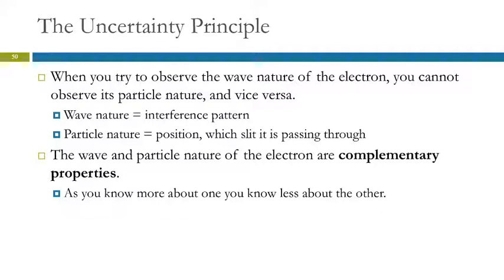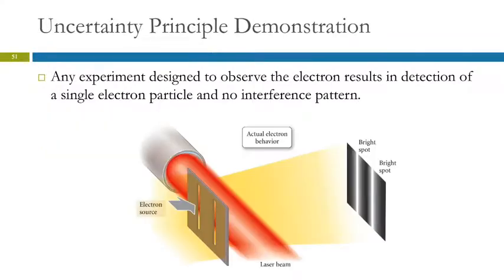So these are called complementary properties. The more you know about one, the less you know about the other. So if we have that double slit experiment set up with the electrons, and they're giving us a nice interference pattern, and we take a laser beam and shine it through here so that we can detect which slit the particle goes through, the diffraction pattern goes away. And we see two bright spots. Now the electrons are behaving like particles. You take the laser beam away, they act like waves again. Right? How does it know that we're looking at it? I don't know. It's a mystery.